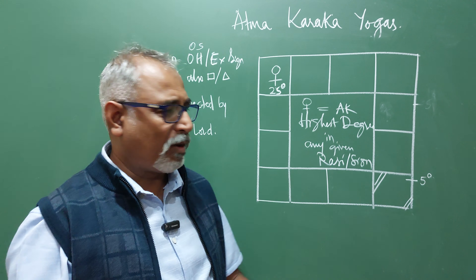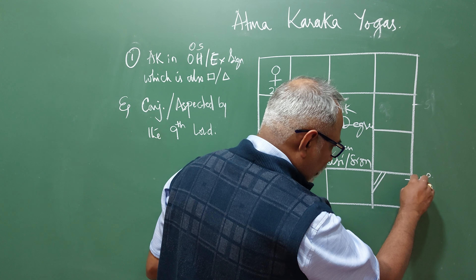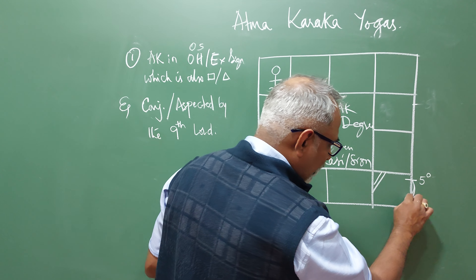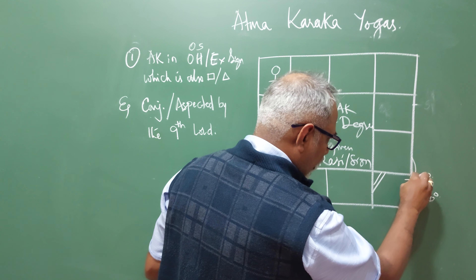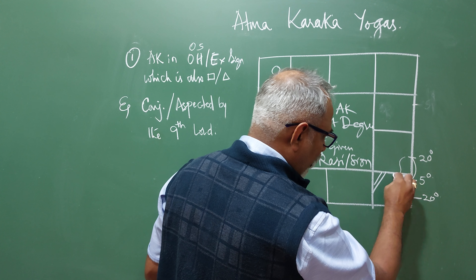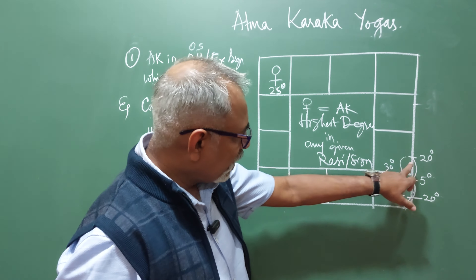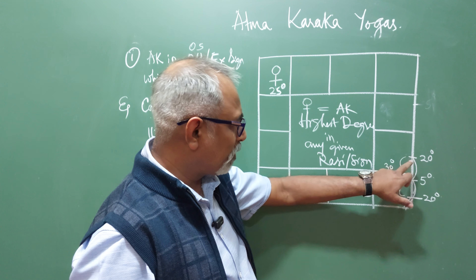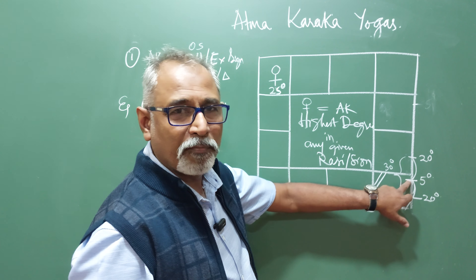The Atmakaraka should also be in a quadrant or a trine. Quadrant means it should be in houses 1, 4, 7, or 10; trine means it should be in houses 1, 5, or 9 from a given ascendant. The ascendant degree is extremely important to understand whether the Atmakaraka is in a quadrant.